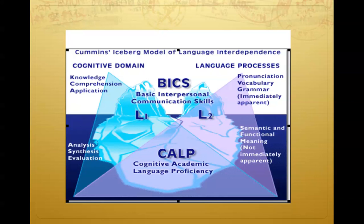Jim Cummings, who coined the terms BICS and CALP, developed the Iceberg Model. If we imagine language proficiency as an iceberg, there are two levels. Above the surface of the water would be conversational proficiency, including the cognitive processes of knowledge, comprehension, and application. Regarding language processes, one would find pronunciation, vocabulary, and grammar. Below the surface lies academic proficiency, which includes the cognitive processes of analysis, synthesis, and evaluation. The language processes located here would be both functional and semantic meaning. To achieve complete language proficiency, one would need to develop both parts of the iceberg.